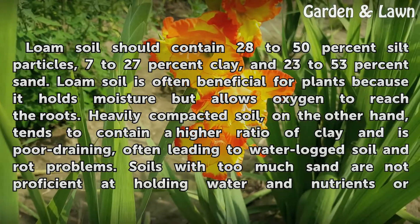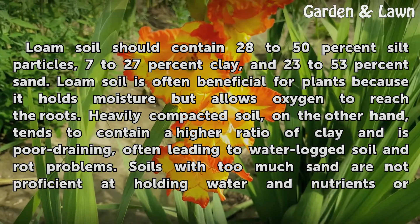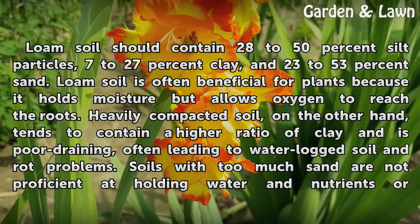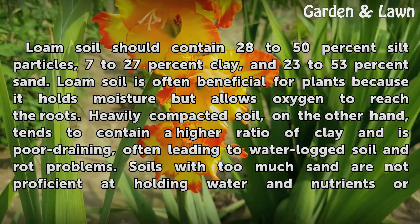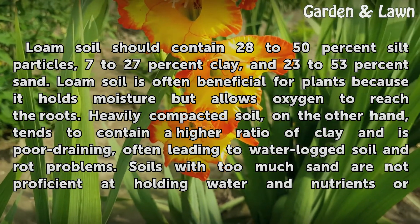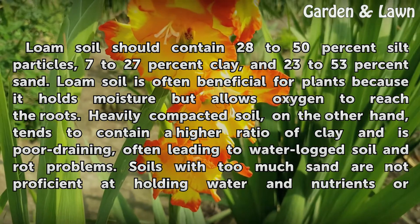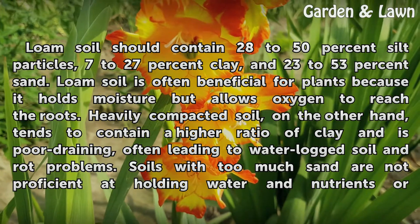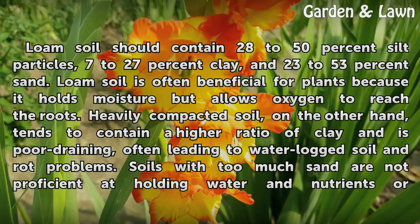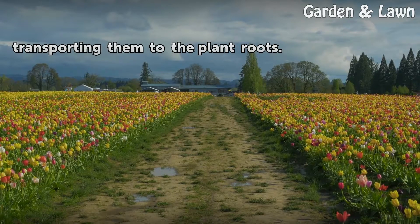Loam soil should contain 28-50% silt particles, 7-27% clay, and 23-53% sand. Loam soil is often beneficial for plants because it holds moisture but allows oxygen to reach the roots. Heavily compacted soil, on the other hand, tends to contain a higher ratio of clay and is poor draining, often leading to waterlogged soil and rot problems. Soils with too much sand are not proficient at holding water and nutrients or transporting them to the plant roots.